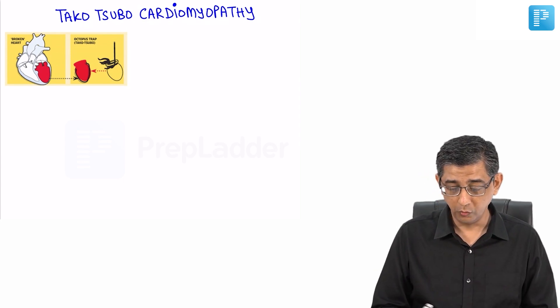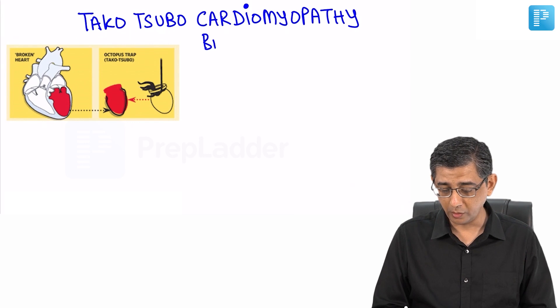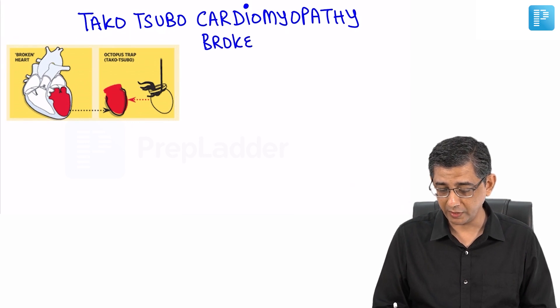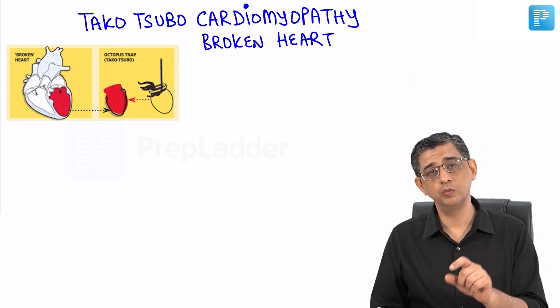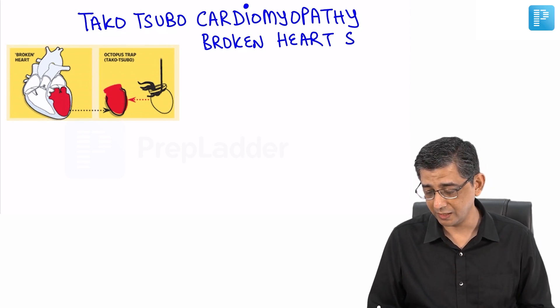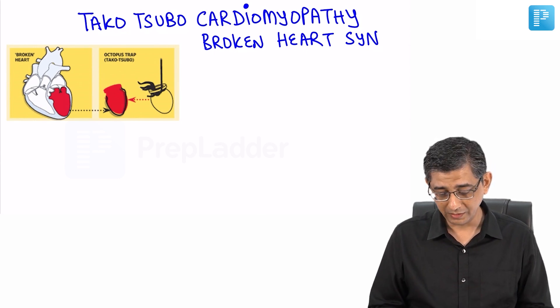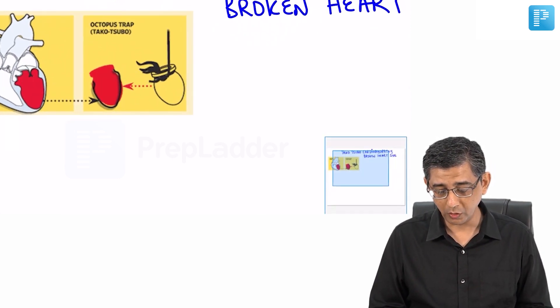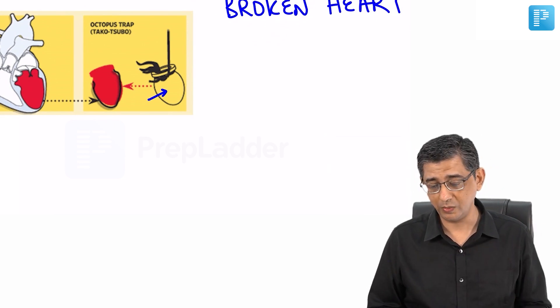We need to understand what is really going wrong in this case and why is this particular nomenclature. The word takotsubo per se is from Japanese language and takotsubo highlights the fact that there is a jar that is used to trap an octopus.